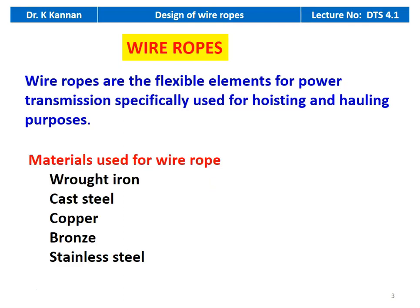Particularly in material handling operations, for lifting with lifts and cranes, we use wire ropes. The materials used for wire rope are wrought iron, cast steel, copper, bronze, and stainless steel.